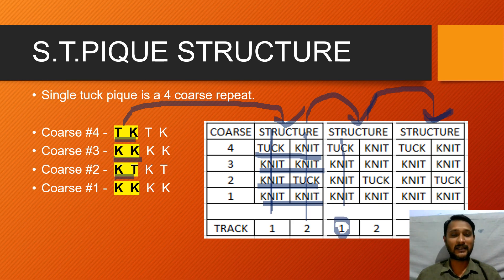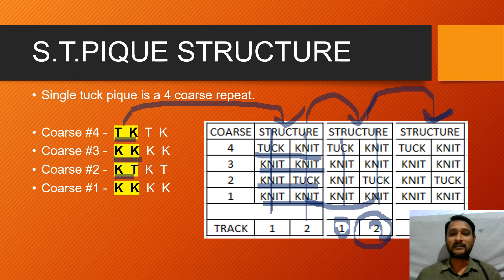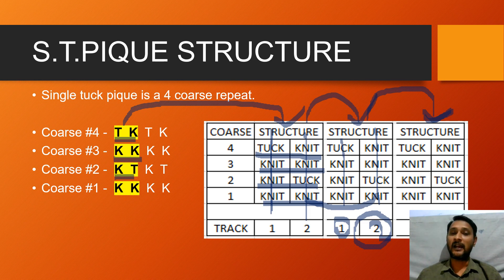Needle number 4 is knit-tuck-knit-knit, just matching to track number 2. This is how the number of tracks required to create a particular structure is identified — and why single tuck PQ requires 2 track needles. That is the concept behind this.